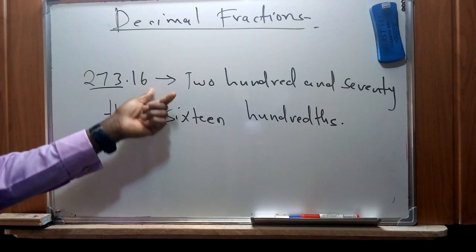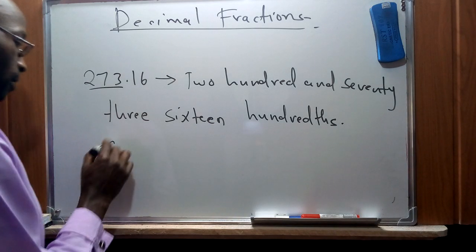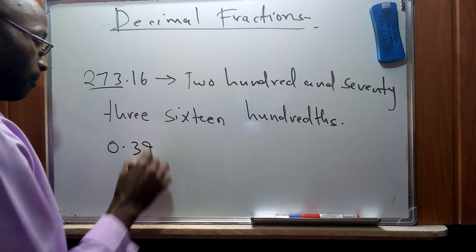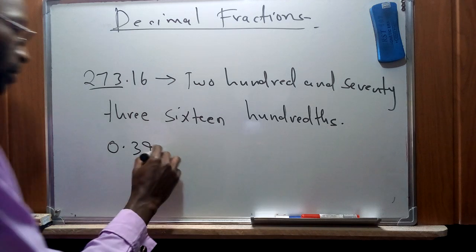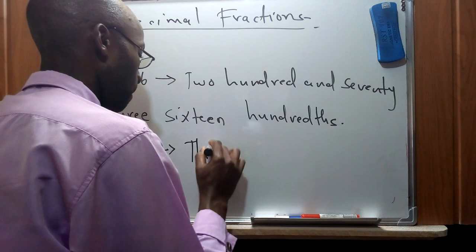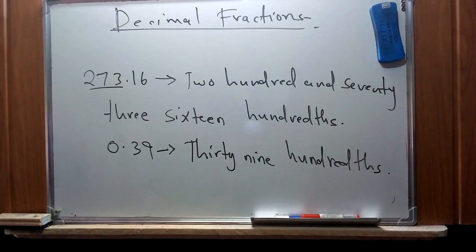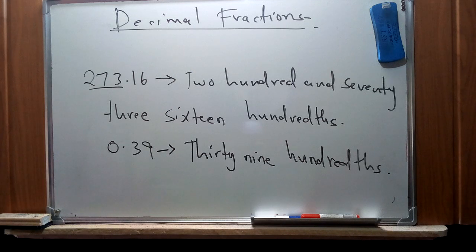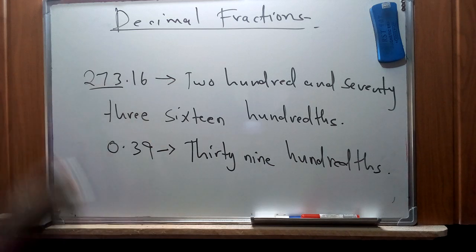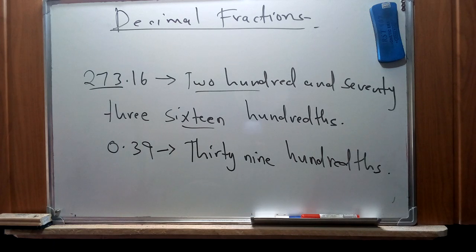Suppose we have no value at the integer digit and we have 0.39 — this is read as 39 hundredths. That is how we read specific decimal fractions containing both integer and decimal digits. Conversely, if given the written statement, we can write the number in the specific numerical order. We also have different rules used when dealing with operations of decimal fractions.